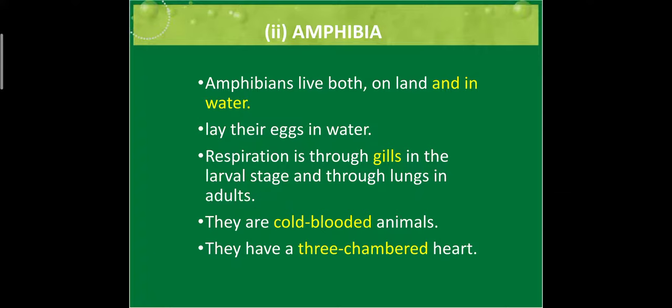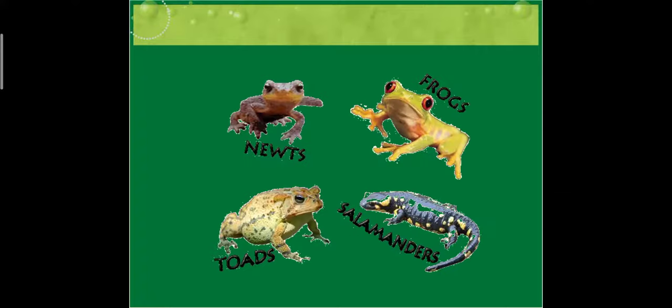Fish was having a two-chambered heart and amphibians have a three-chambered heart — both are cold-blooded animals. Examples: newts, toads, salamander and frog. NCRT examples include salamander, toad, Rana tigrina (common frog), and Hyla (tree frog).